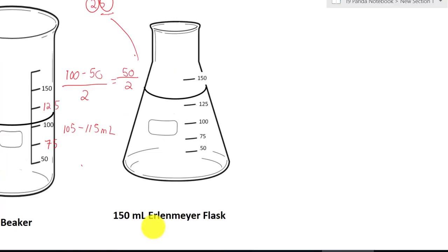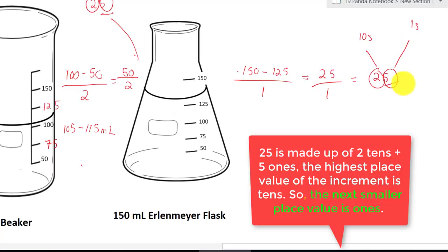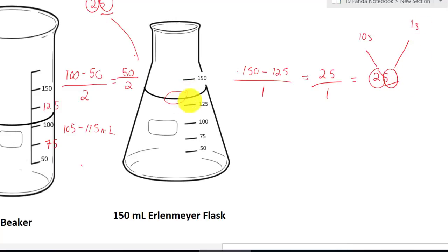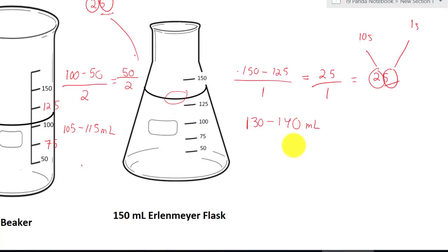Last one — a 150-milliliter Erlenmeyer flask. Find the difference: 150 minus 125 equals 25, divided by one increment, gives 25. The increment value of 25 is in the tens place, so the ones place is where we estimate. The meniscus is right here, between 130 and 140 milliliters. Notice the answer is very rough because the increment value is very large.